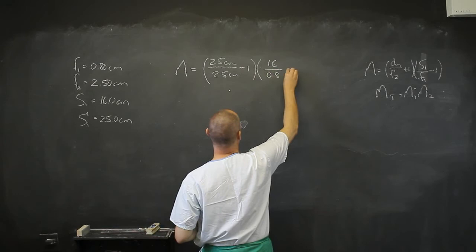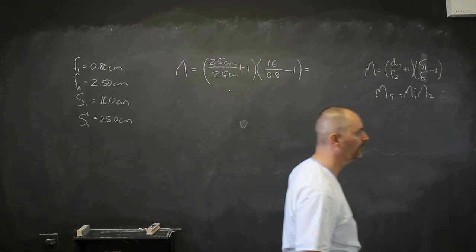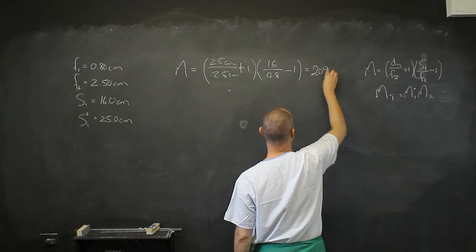0.8, and it's plus 1, sorry, and negative 1. And that gives me an answer of about 209. 209 is going to be the magnification, and that's a positive 209.